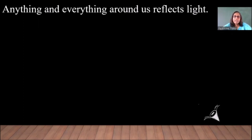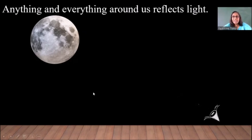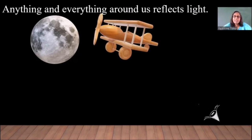I have shown an eye here just to represent us. We can see the moon because the light from the moon reaches the eye. Similarly, a toy or a real aeroplane in the sky — we can see it only because the light from that object reaches the eye.